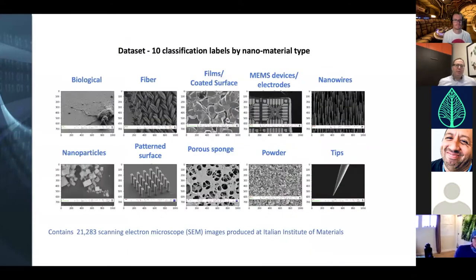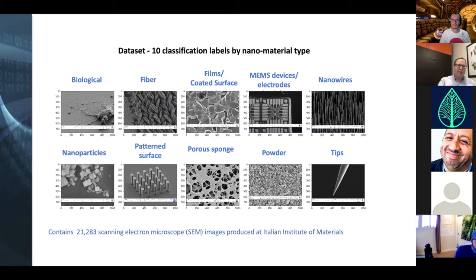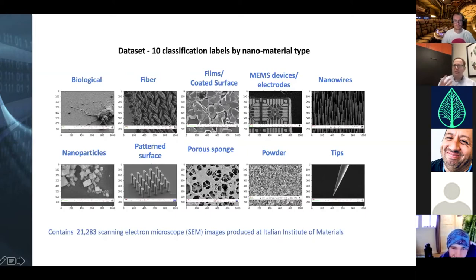To build the image classifier I used a dataset of electron microscope images from the Italian Institute of Materials — about 20,000 images, broken up into 10 different labels. These are representative images of the classification labels: things like biological, fibrous materials, nanowires, nanoparticles, and sponge-like materials — what your kitchen sponge would look like under an electron microscope, with all those pores.